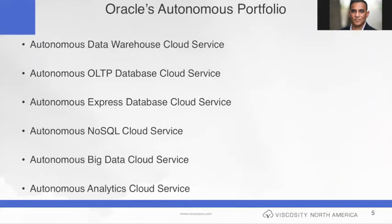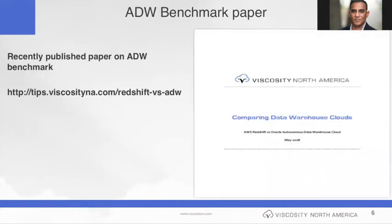As you've probably seen and heard a lot of buzz around the Autonomous Framework and Autonomous Stories at Oracle, here's the Autonomous Portfolio as I see it. There's five or six autonomous platforms being rolled out: Autonomous Data Warehouse, which was announced and released at Open World last year, then we have OLTP, Express Database Cloud, NoSQL Cloud, Big Data Cloud, and Analytics Cloud. We at Viscosity have been really fortunate — we had the opportunity to test and get acquainted with ADW since January, and that's sparked a lot of our attention in working with customers.